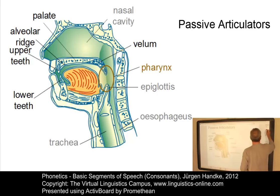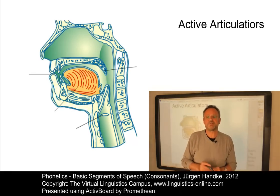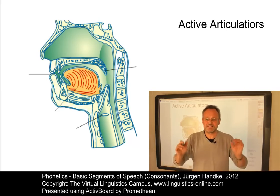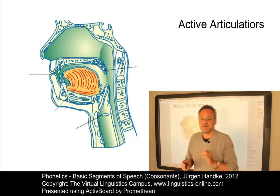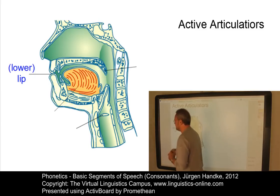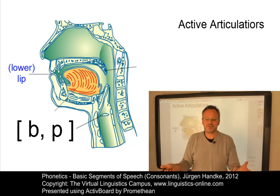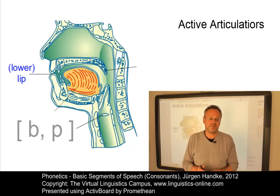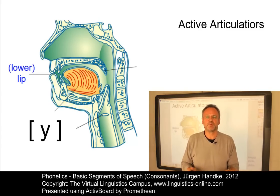Let us now look at the active articulators. The organ which is moved towards a passive articulator in producing speech sounds is called the active articulator. Starting at the front of the vocal tract, the first active articulator is the lower lip or the lips. The lips are actively involved in the production of labial consonants such as B or P, and also in the application of lip rounding to vowels.